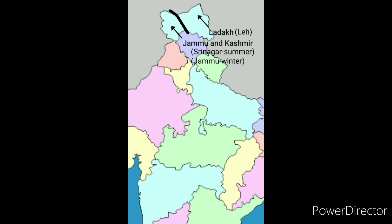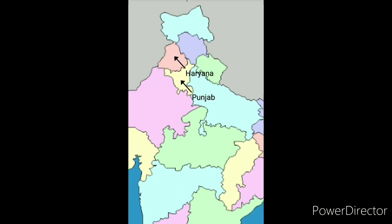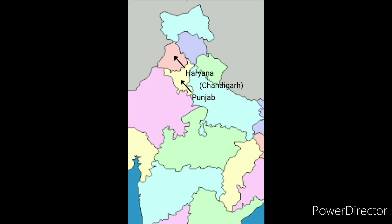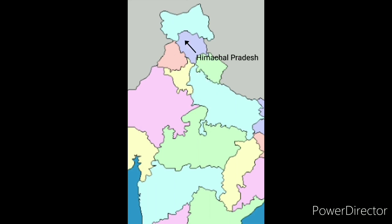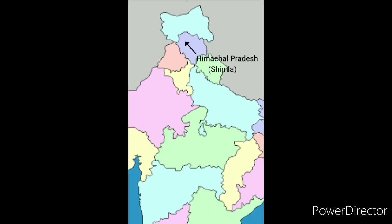The capital of Jammu and Kashmir is Srinagar in summer and Jammu in winter. Below Jammu and Kashmir we have Punjab and Haryana. They share a common capital at Chandigarh. Chandigarh is also a union territory. Then we have Himachal Pradesh and its capital is Shimla.